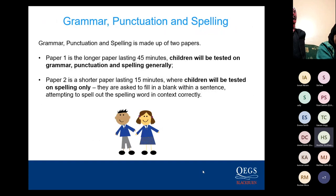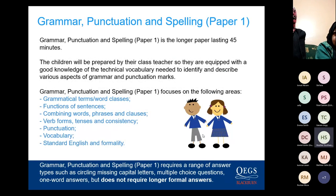Looking at each individual paper: grammar, punctuation and spelling is made up of two papers. Paper one is the longer paper, lasting around 45 minutes, where children will be tested on grammar, punctuation and spelling generally. Paper two is a shorter paper, lasting 15 minutes, where children will be tested on spelling only — asked to fill in a blank within a sentence, spelling the word correctly in context. The children will be prepared so they're equipped with a good knowledge of technical vocabulary needed to identify and describe various aspects of grammar and punctuation.